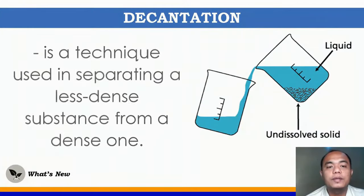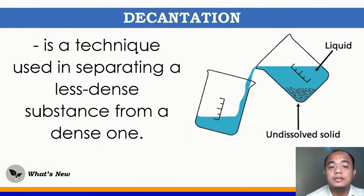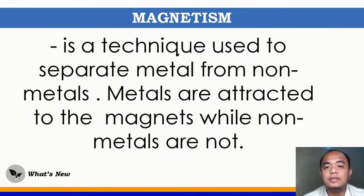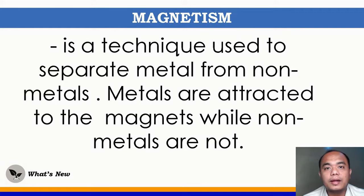Next is decantation. Decantation is a technique used in separating a less dense substance from a dense one — like soil, which is heavier and settles, and then you pour the liquid into another container. We also have magnetism — a technique used to separate metals from non-metals. Metals are attracted to the magnet while non-metals are not, like separating thumbtacks from sand using a magnet.